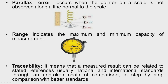When the observer observes the scale and pointer from location 2, observing the scale normally, we get the correct reading. When observing from location 1, the reading obtained is incorrect. Similarly, observing from location 3 also introduces an error. This parallax error can be eliminated by reducing the distance between the scale and pointer.